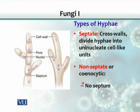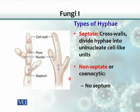If we further define hyphae, there are two kinds. One type has been split into small compartments or cells with a partition called a septum — this kind of hyphae is called septate, meaning they are divided with a septum between the cells. The other kind is non-septate, also known as coenocytic, which has no septum or partitioning between the cells.